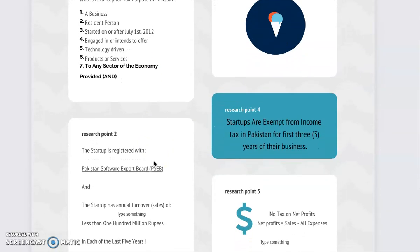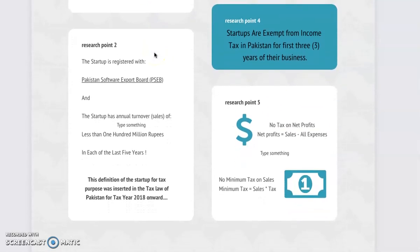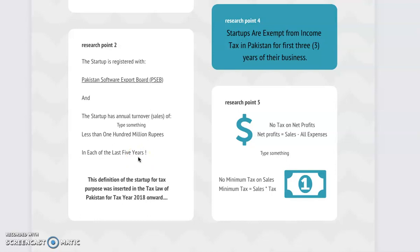The second part: your business has to be registered with the Federal Board of Revenue, but for this specific exemption you also have to register with the Pakistan Software Export Board (PSEB). The third condition is that your startup should have annual sales of less than 100 million rupees — that is 10 crore rupees — in each of the last 5 years. So if you have been running your business for 2 years, your annual sales to customers in each of those years should be less than 100 million rupees.